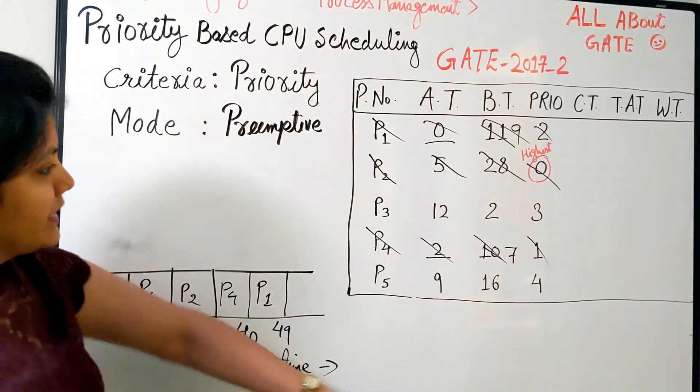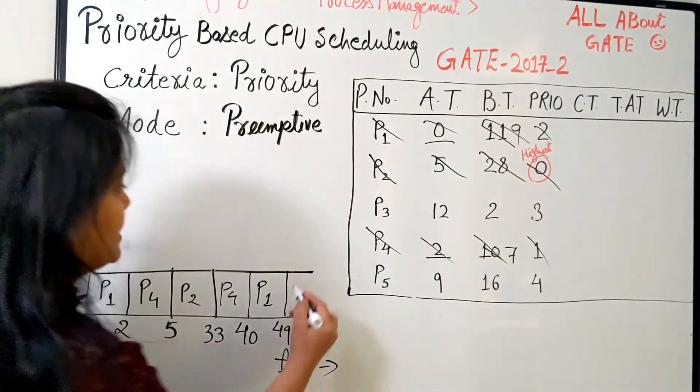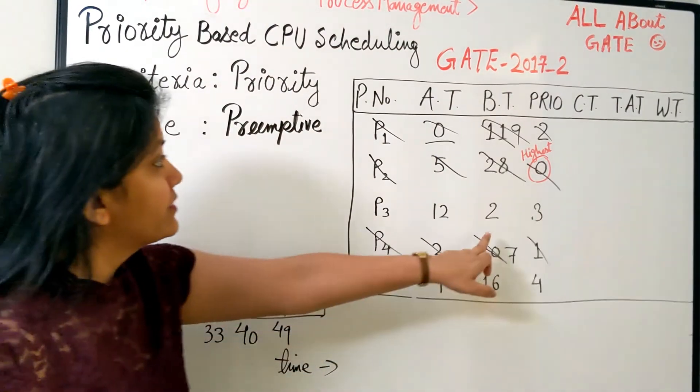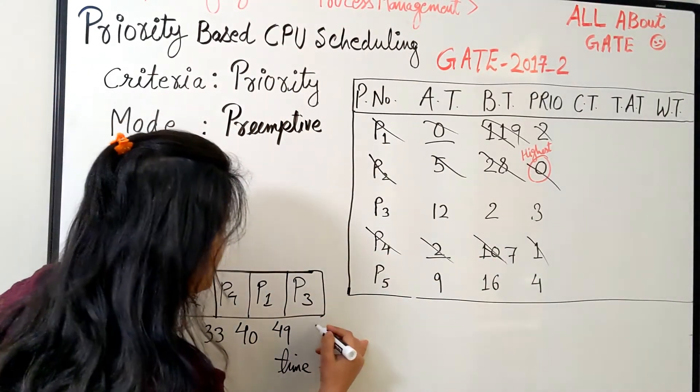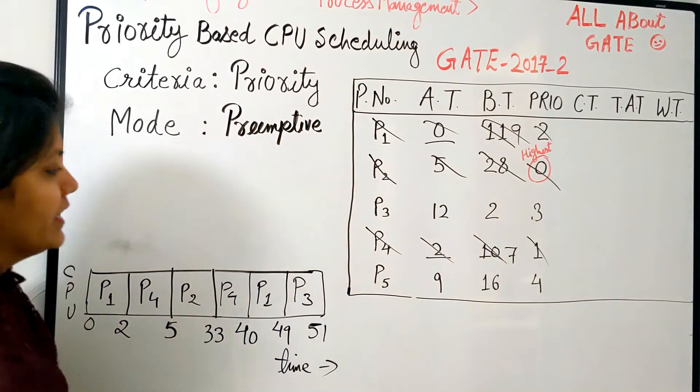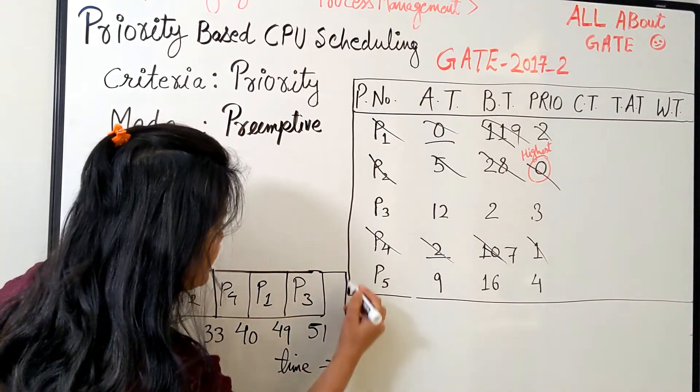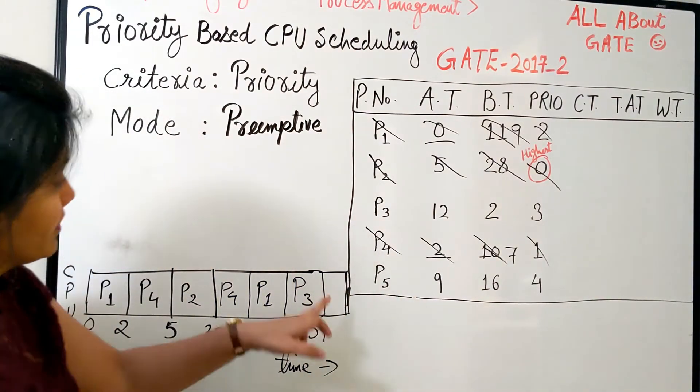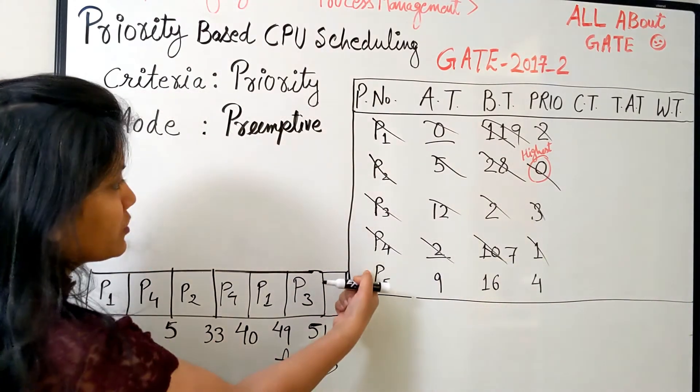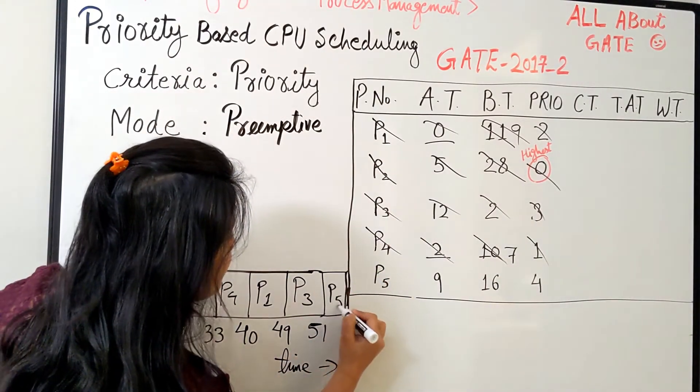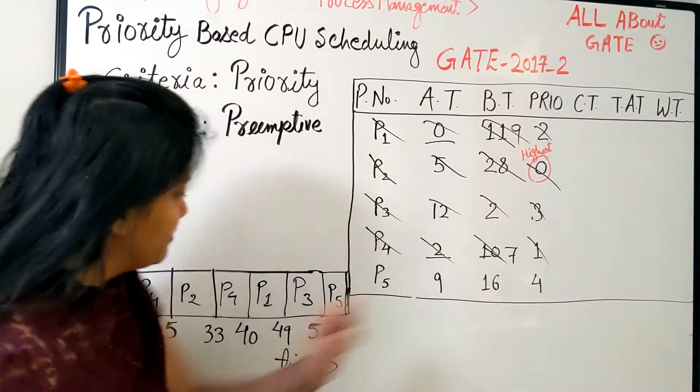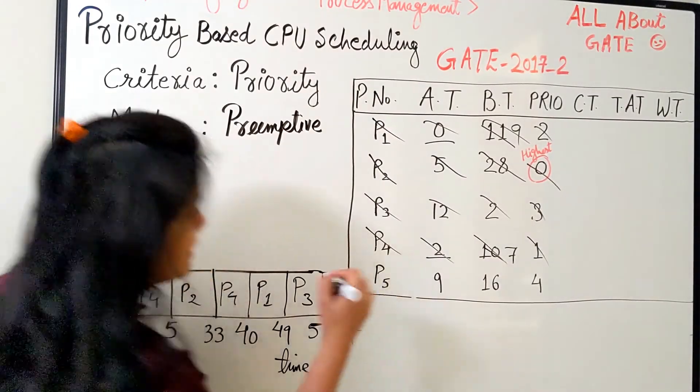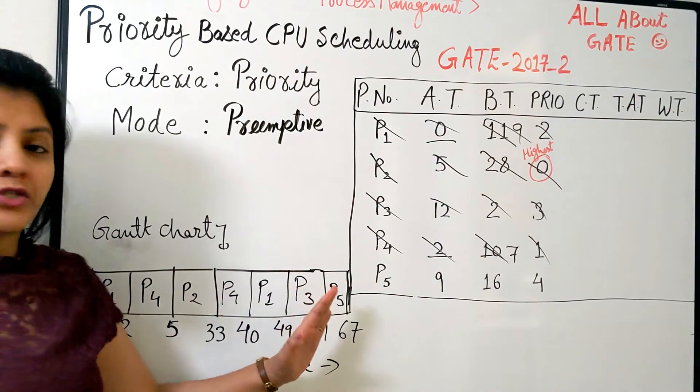Now the next highest number is 3, so P3 gets a chance. P3 needs 2 burst, so 49 plus 2 equals 51. P3 is done. The last process to be scheduled is P5, which needs 16 burst, so 51 plus 16 makes 67.